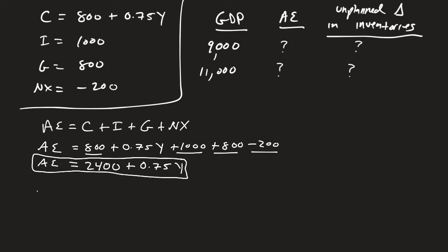So what happens if GDP is equal to 9,000? Well, I just plug this in. Aggregate expenditure is going to equal 2,400 plus 0.75 times 9,000. I'll plug that into my calculator. I'll get 2,400 plus 6,750. So that means aggregate expenditure at this point, when I plug that into my calculator, is going to be 9,150.